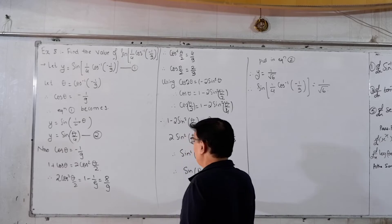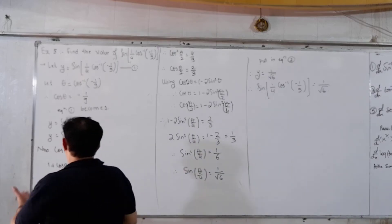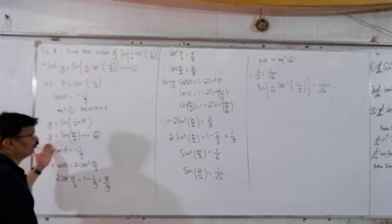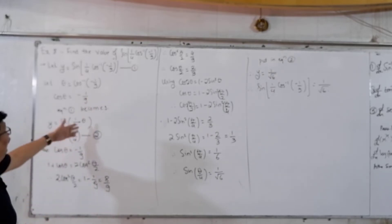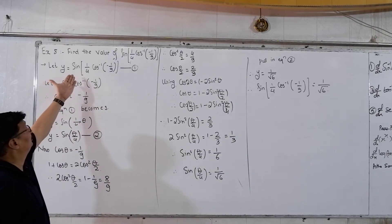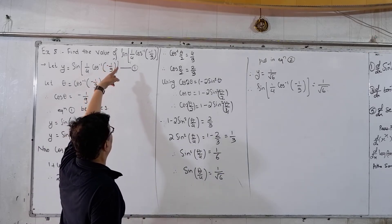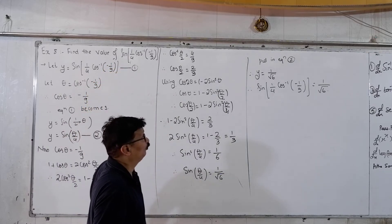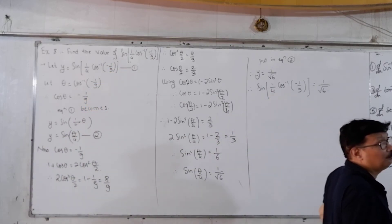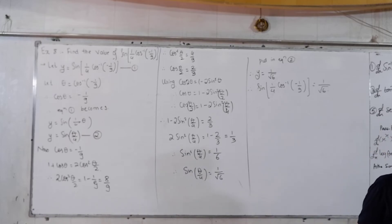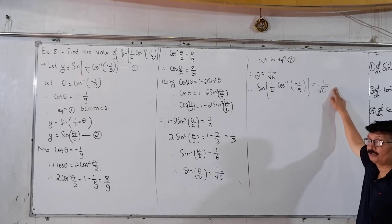Since sin(θ/4) = y from Equation 2, we have y = 1/√6. And therefore sin(1/4 · cos⁻¹(−1/9)) = 1/√6.